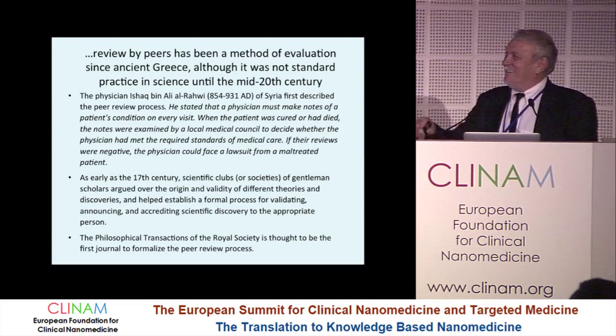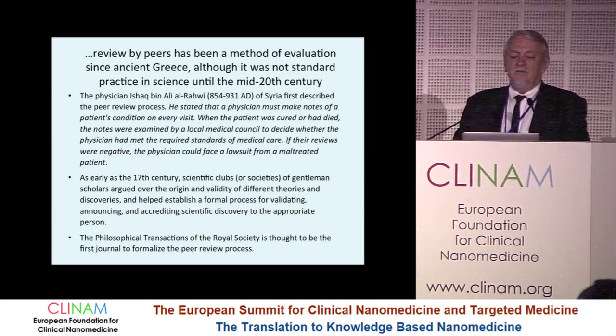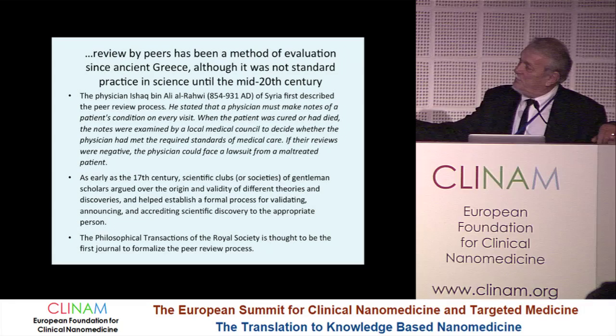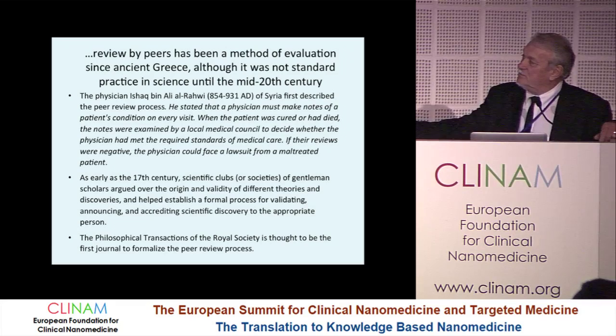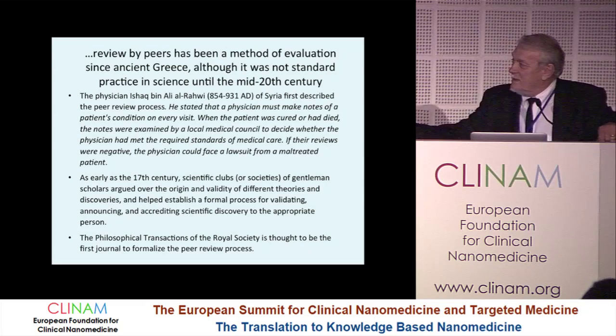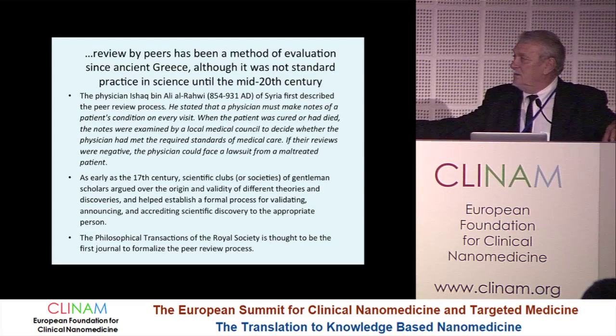Review by peers has been a method since ancient Greece, starting in a somewhat different way. Already around 800 to 900 AD, a Syrian physician first described the peer-review process. It stated that the physician must make notes of patient condition — whether the patient was cured or had died. The body was examined, and if it didn't meet the required standard of medical care, the peer reviews were negative and the physician could face a lawsuit. It was early in the 17th century that they started scientific clubs and societies, getting together and discussing work, giving credibility and establishing a formal process.